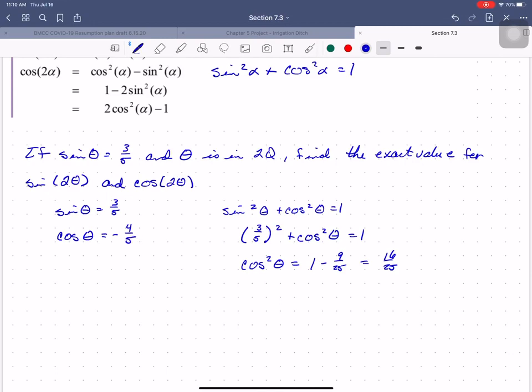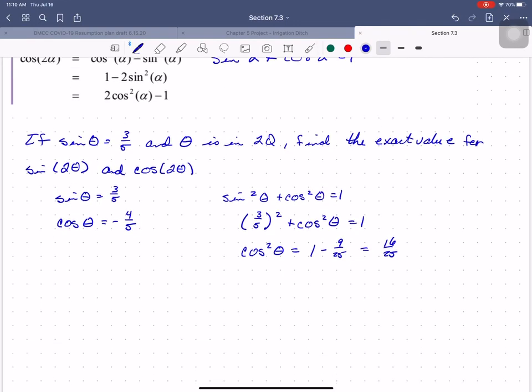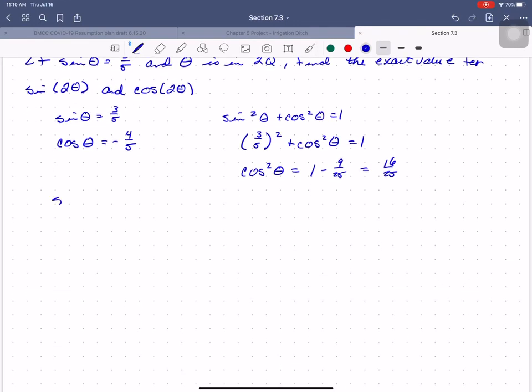And now we're ready to apply the double angle formulas. So sine 2 theta equals 2 sine theta times cosine theta, which means that this is 2 times 3 fifths times negative 4 fifths, which is negative 24 twenty-fifths, excuse me.